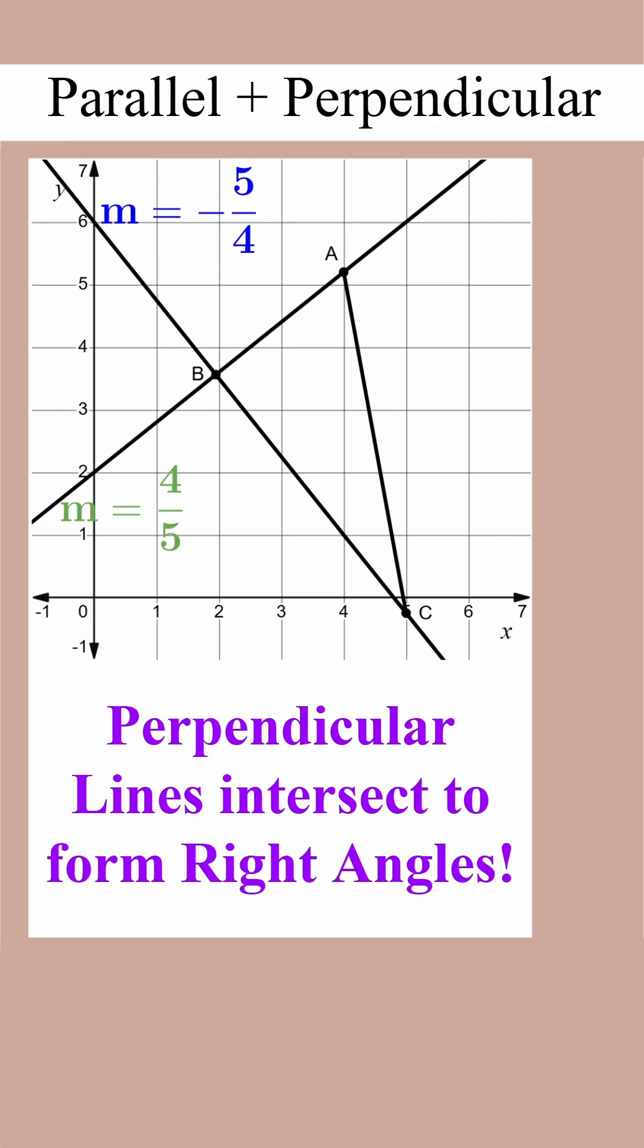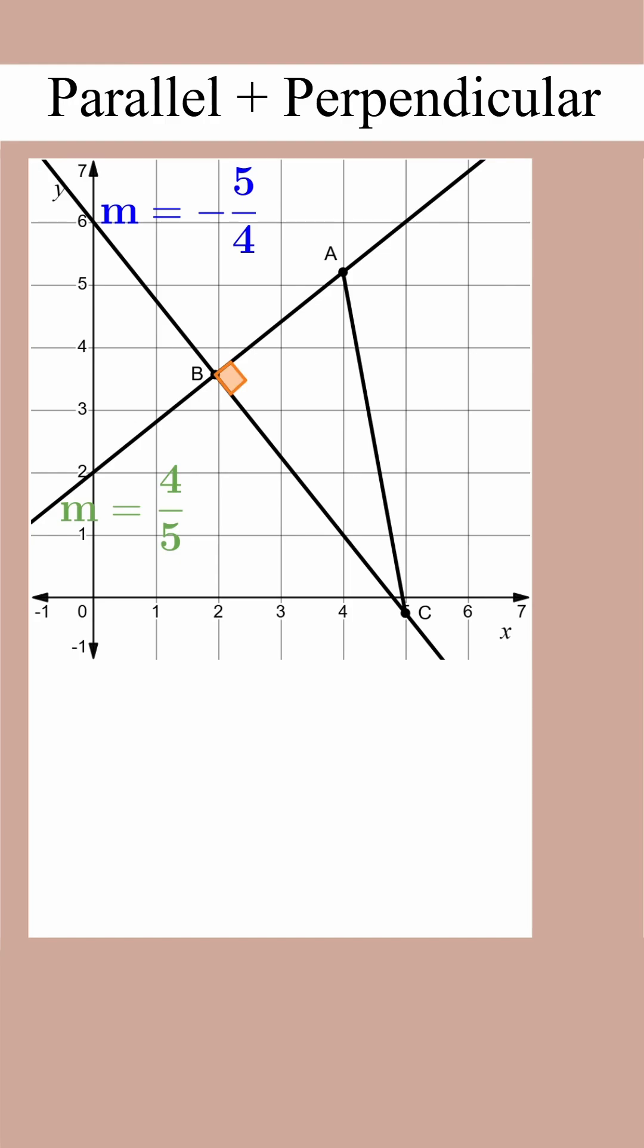And don't forget, perpendicular lines intersect to form right angles. So all four angles around point B are going to be right. This means that ABC is a right triangle, and we could answer any follow-up question using concepts for right triangles.